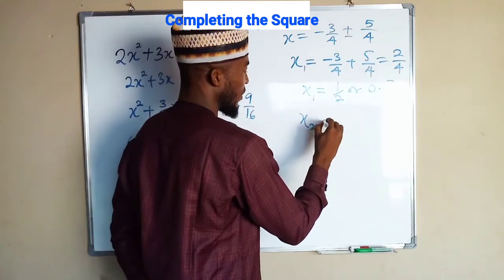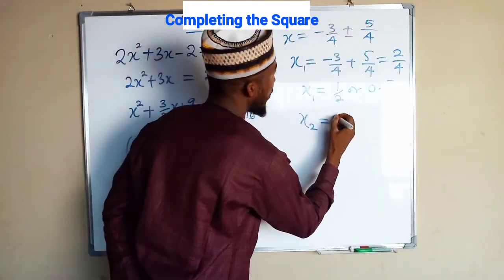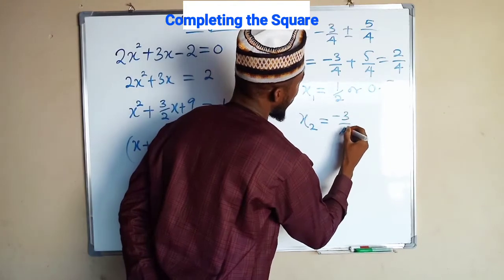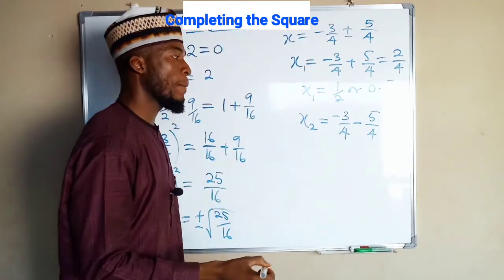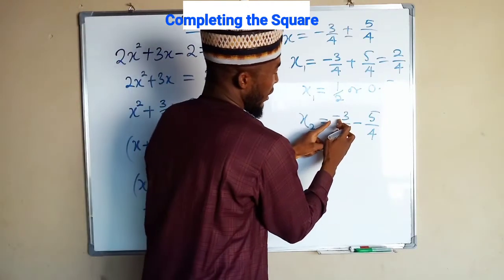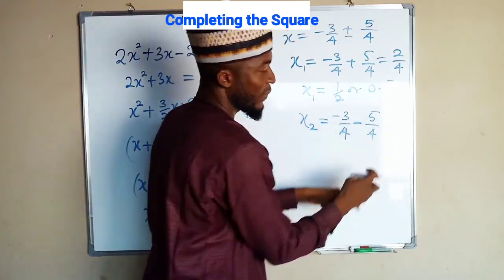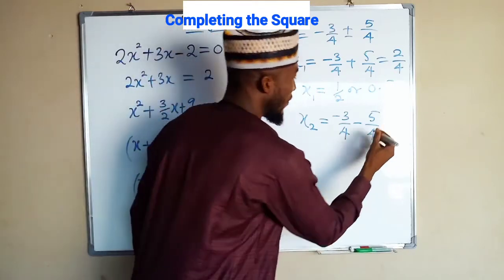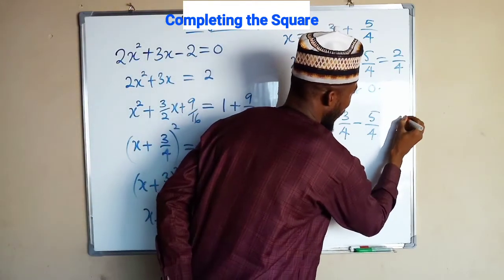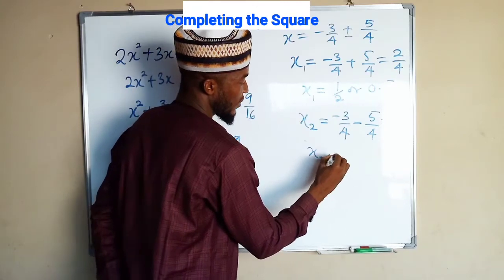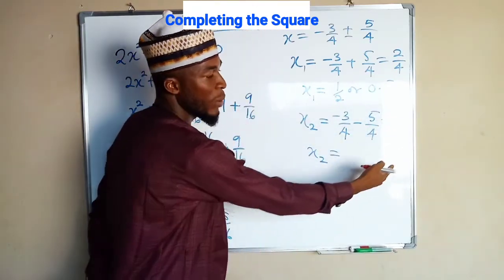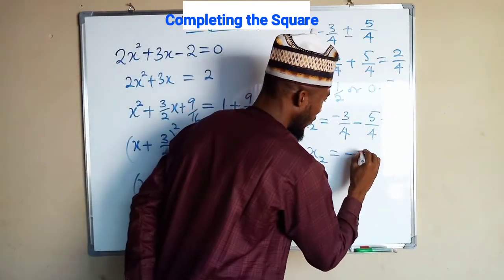Then for x2 we use the negative sign. Negative 3 over 4 then minus 5 over 4. Negative 3 negative 5 is going to make it negative 8. This is negative 8 over 4. And we say x2 is now equal to negative 8 divided by 4 is negative 2.